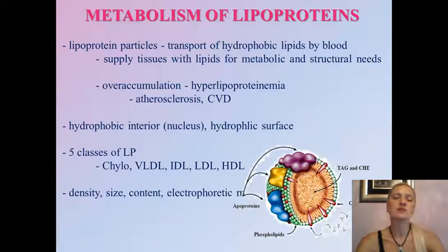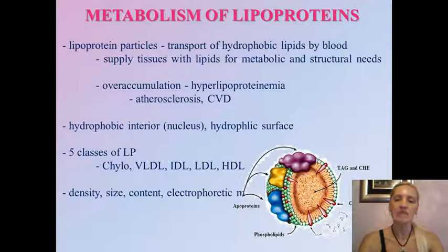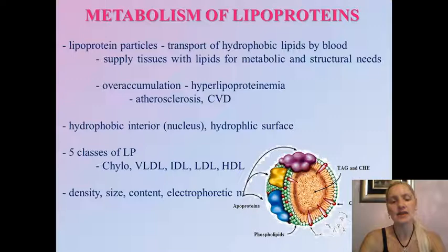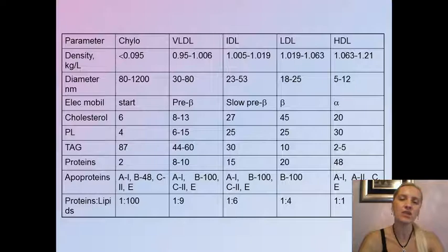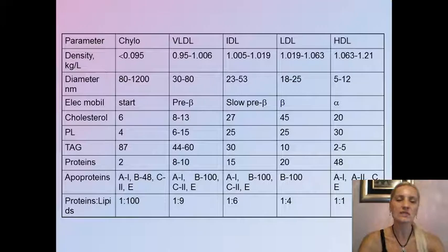There are five major classes of lipoproteins: chylomicrons, VLDL (very low density lipoproteins), IDL (intermediate density lipoproteins), LDL (low density lipoproteins), and HDL (high density lipoproteins). Apart from their difference in density, they also differ in size, content, and electrophoretic mobility. The upcoming table summarizes the major characteristics of these five classes.